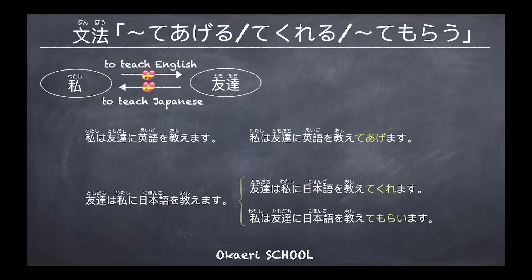For example: watashi wa tomodachi ni eigo wo oshiemasu — I teach a friend English. But in the te-ageru form, oshieru becomes the te-form: oshiete. Then we add ageru, or in polite form, agemasu. So the sentence becomes: watashi wa tomodachi ni eigo wo oshiete agemasu.